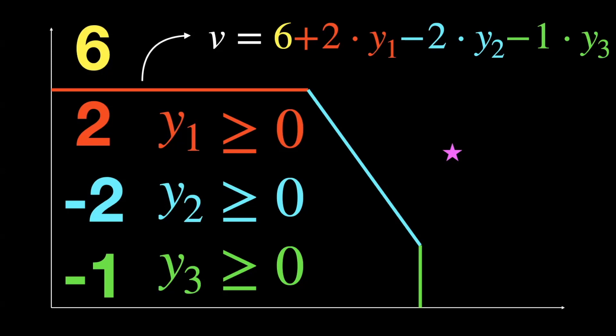If player one chooses a star outside the walls with a negative wall score, the multiplier player can set that multiplier to infinity, making v negative infinity — a huge loss for player one. So player one is forced to keep all wall scores non-negative, which is equivalent to staying within the walls. We've recovered a game that produces the exact same optimal value as the original linear program.